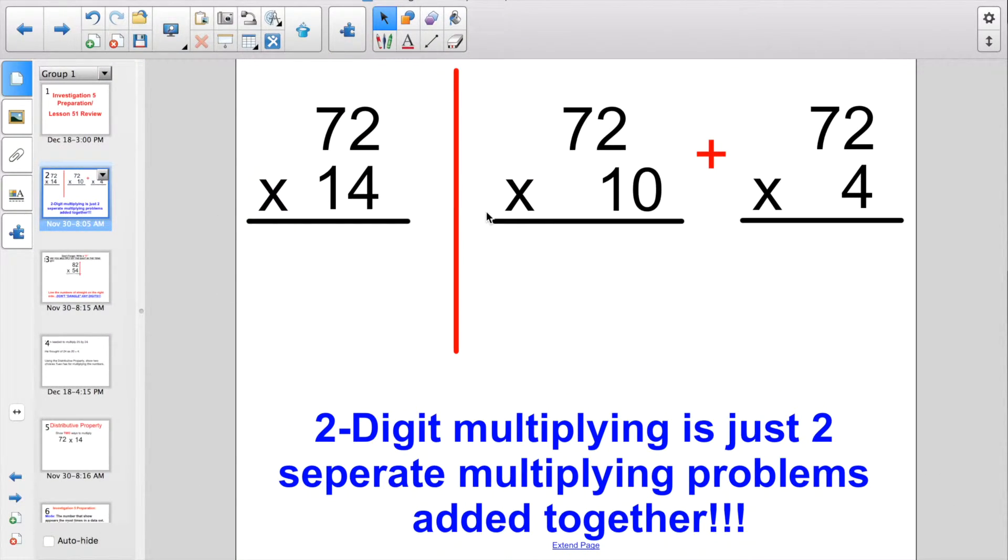This should look familiar from Lesson 51, because I started off explaining two-digit multiplying is just two separate multiplying problems added together. If you were going to add 72 times 14, you're just basically multiplying 72 times 10, because that's the digit the ones place holds, and you're going to add that answer to 72 times 4. But I think some people just watched about the first 30 seconds of this, because I saw some people actually attempting to do two-digit multiplying like this, and that was not what we talked about later on in the lesson. People need to be focused.